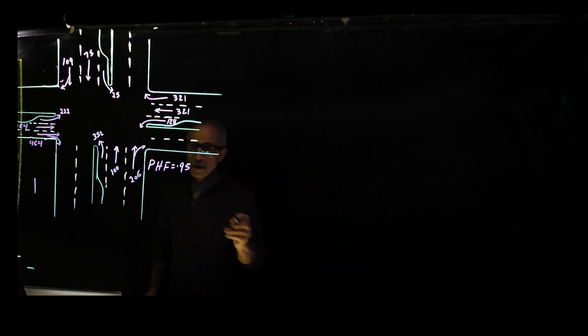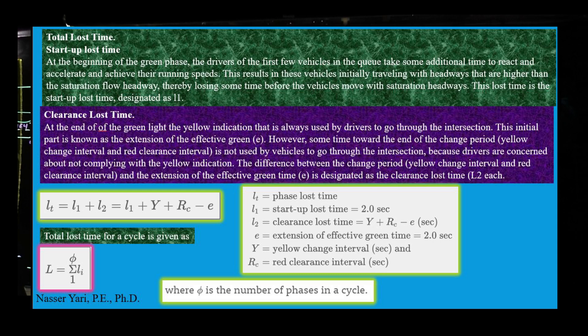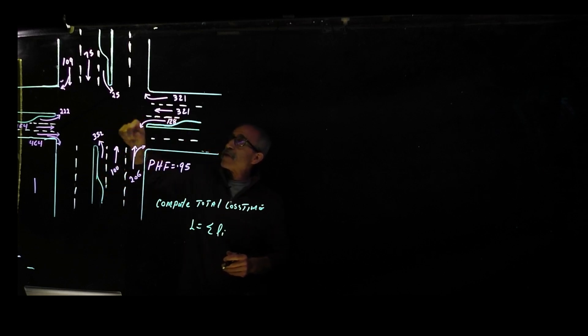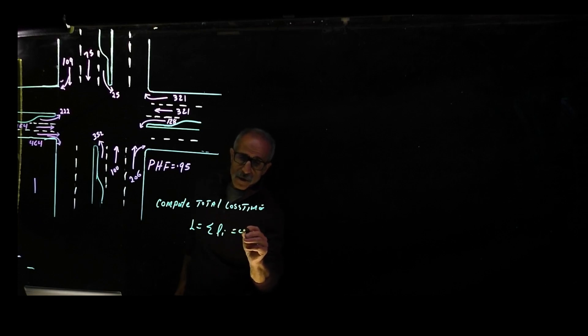The first thing I'm going to do is compute total lost time. We said the L is equal to summation of all individual L. We give it 3 seconds for each phase, and total lost time will be 4 times 3, and that equals 12 seconds.